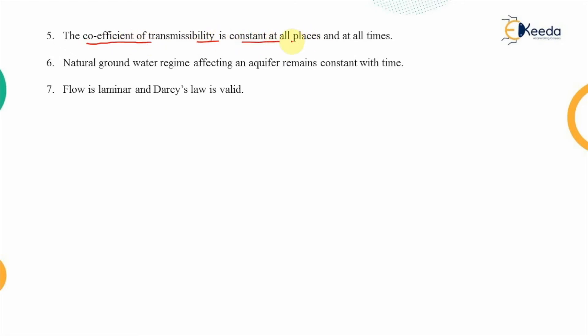The fifth assumption is that the coefficient of transmissibility is constant at all places and at all times. The coefficient of transmissibility is the product of the coefficient of permeability and the width of the aquifer, representing how easily water can be extracted from the aquifer. It should not vary from place to place within the aquifer, nor should it change with different seasons of the year.